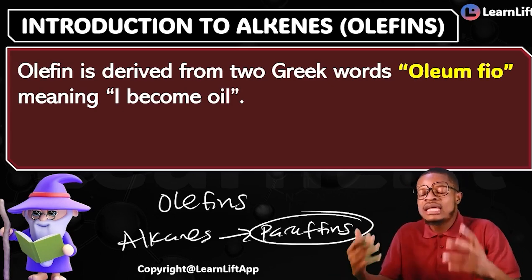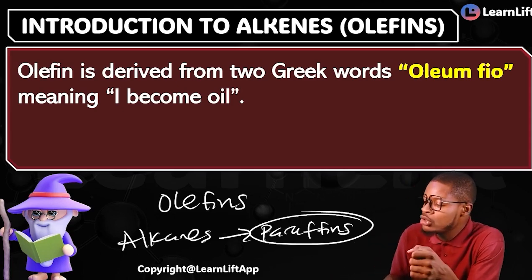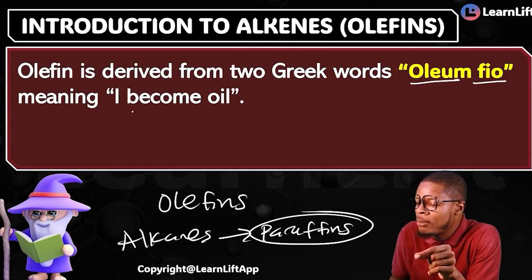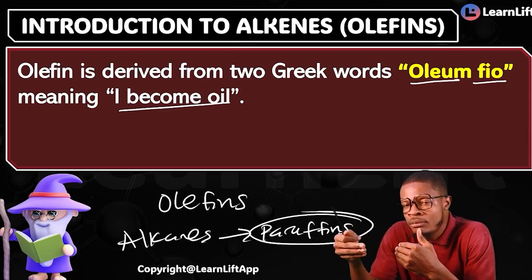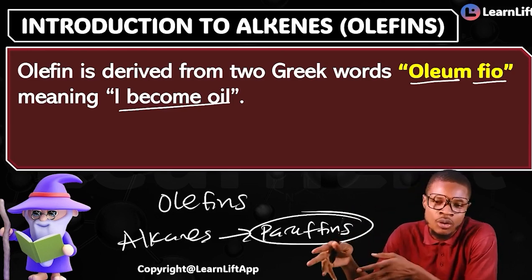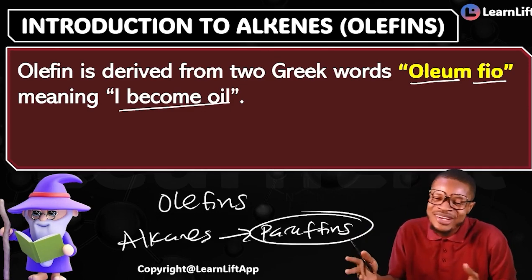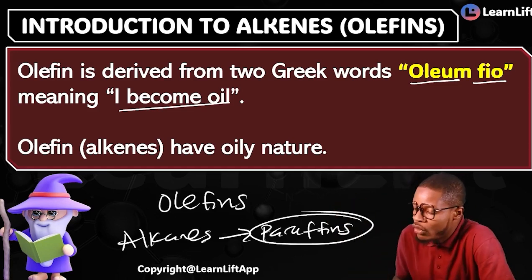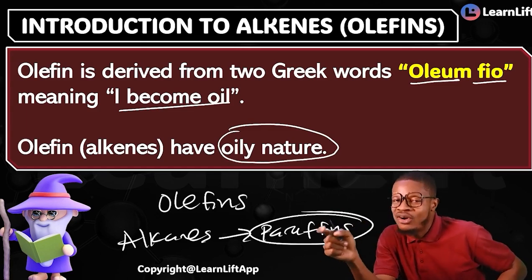What about your olefins, which are your alkenes? Don't forget that olefins — they are also derived from Greek words. The Greek words that we obtain olefins from is called 'oleum fiu.' Oleum fiu means 'I become oil.' The reason why we call them olefins is that back then, organic chemists believed that any reaction that alkenes undergo will always produce an oily substance. So they give rise to oily secretions, majorly. That's how we call them olefins, which means 'I become oil.'